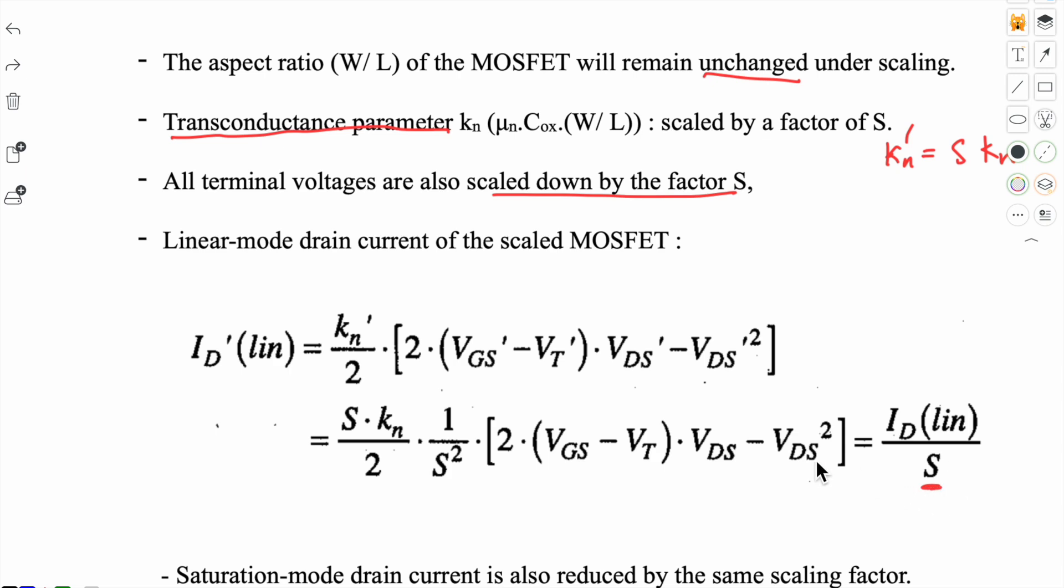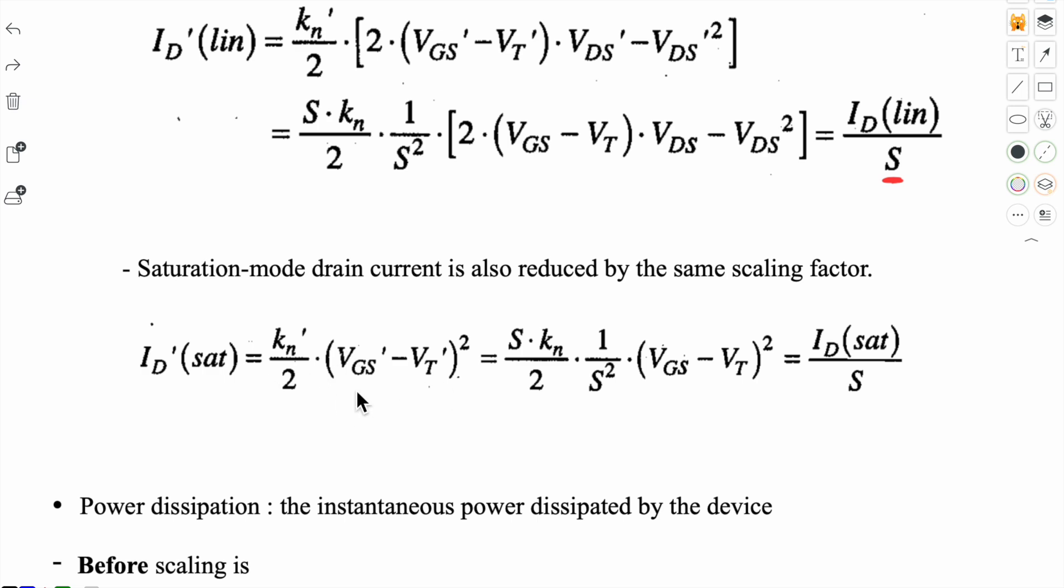And what about the saturation mode drain current? Here also, you can place the values and see that this will also be scaled down. That means drain current in both modes of operation will reduce by the same scaling factor.